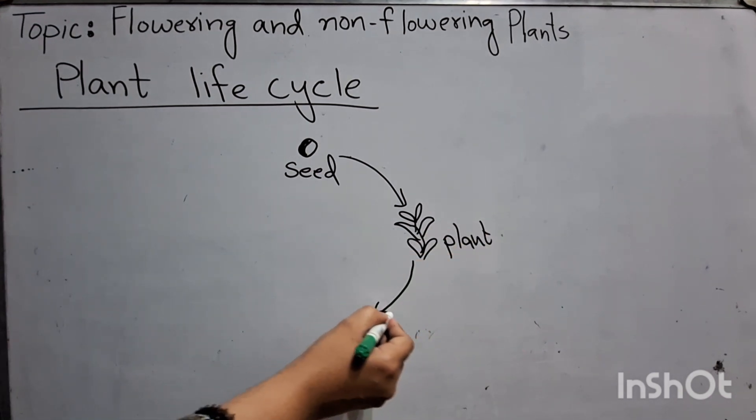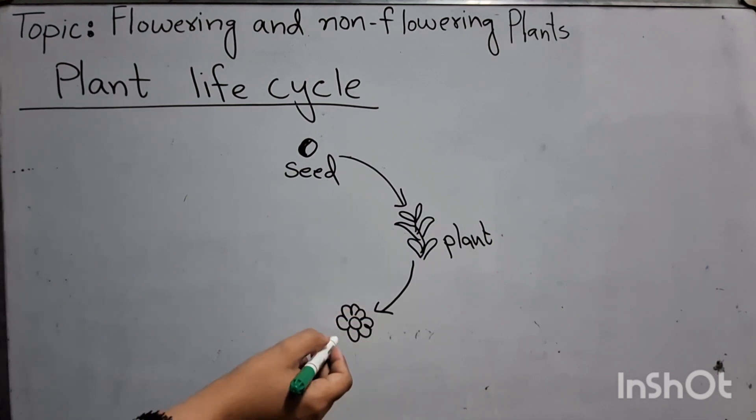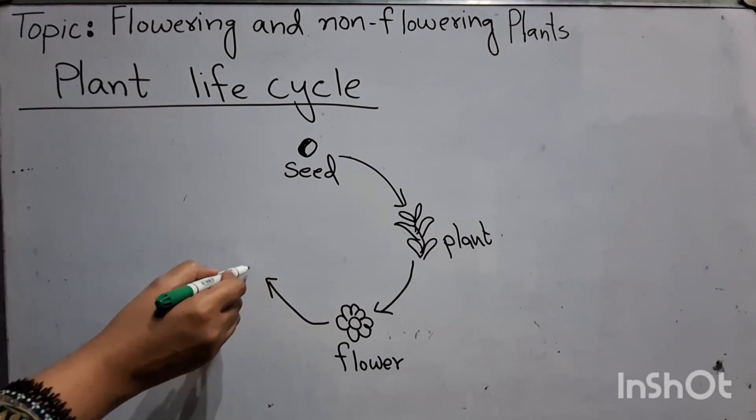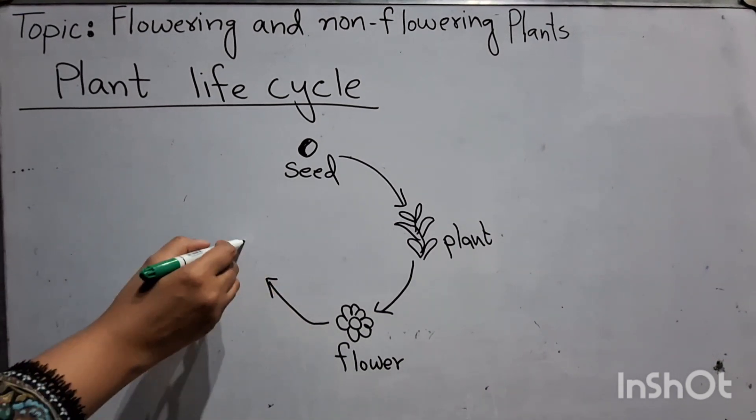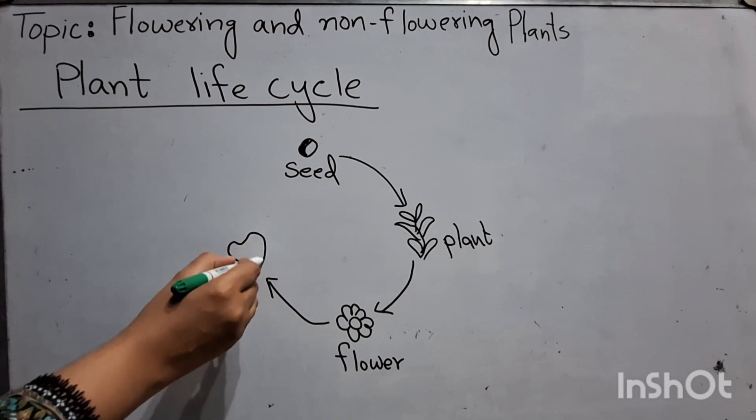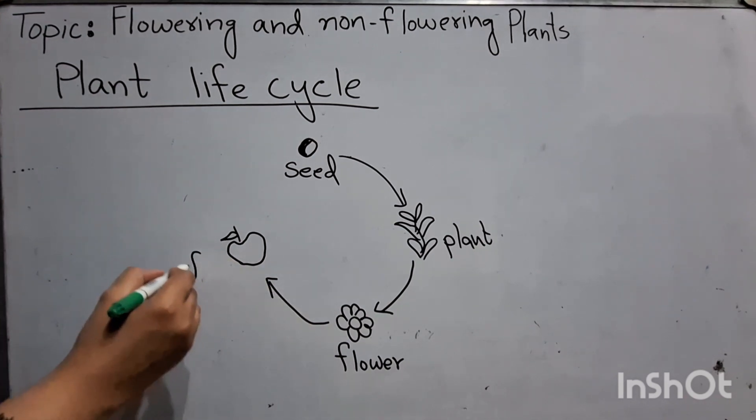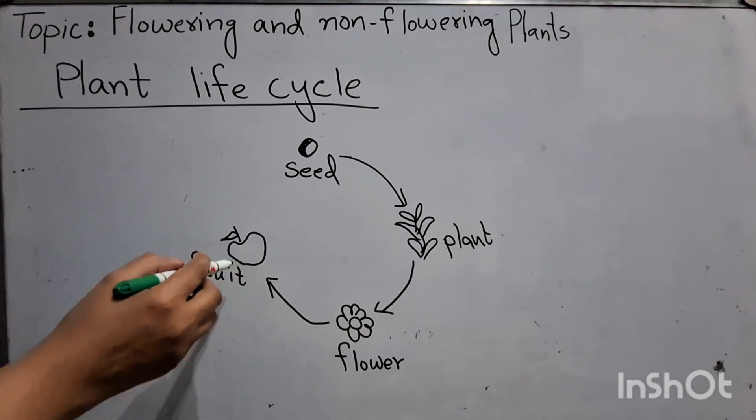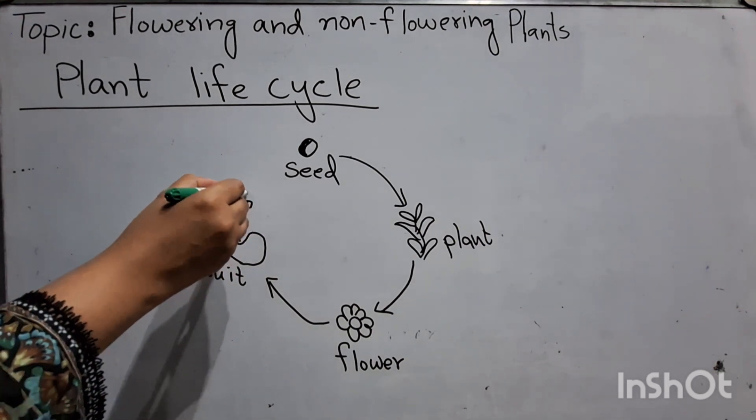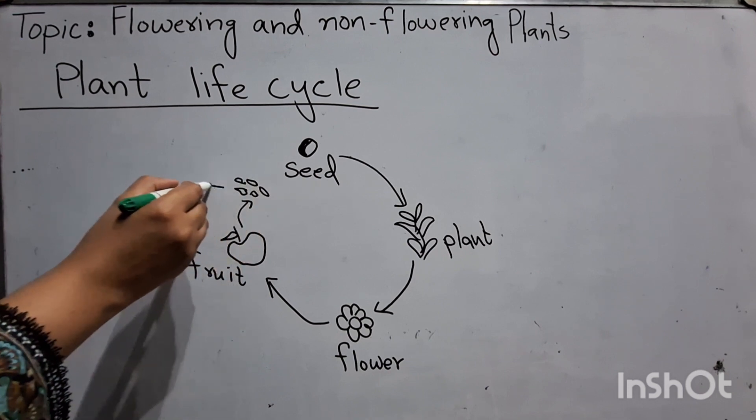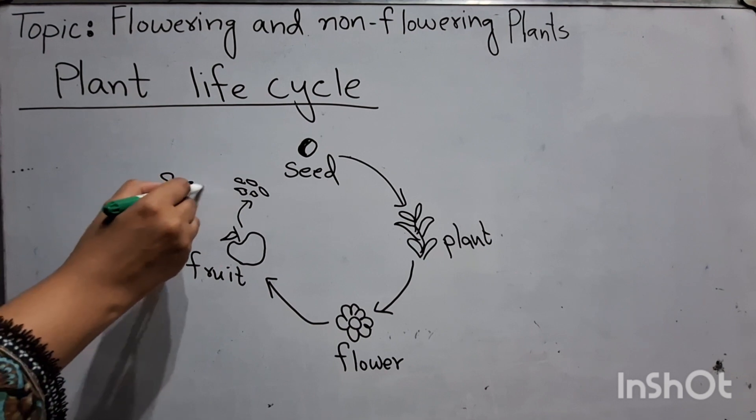The plant grows flower. When flower dies, it produces fruit. Fruit produces seeds.